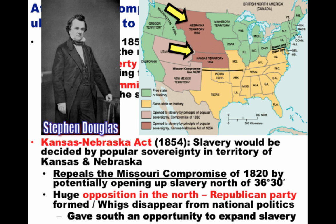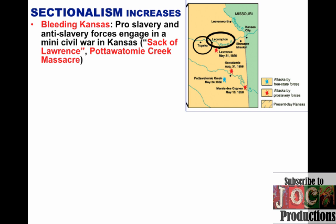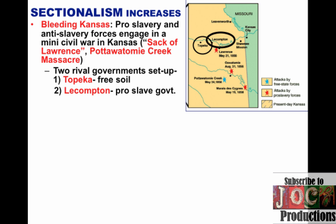The Republican Party is formed and the Whig Party ultimately disappears over the division of whether or not to support the Kansas-Nebraska Act. For Northerners, this was seen as giving the South an opportunity to expand slavery into an area it was previously closed off to. Throughout the 1850s, sectional tension increased. As a result of the Kansas-Nebraska Act, you get Bleeding Kansas, where pro-slavery and anti-slavery forces engaged in a mini-civil war in the territory of Kansas. You get events like the Sack of Lawrence, where pro-slavery supporters attacked free-soilers in the town of Lawrence, and Pottawatomie Creek, where John Brown and his followers hacked to death pro-slavery supporters. There were two rival governments in the territory — Topeka, the free-soil government, and Lecompton, the pro-slavery government in Kansas.